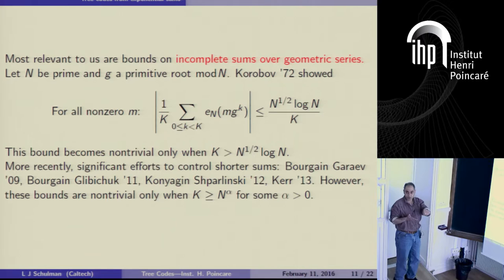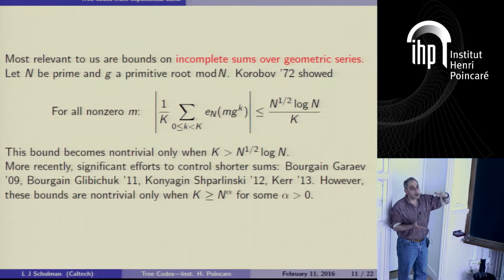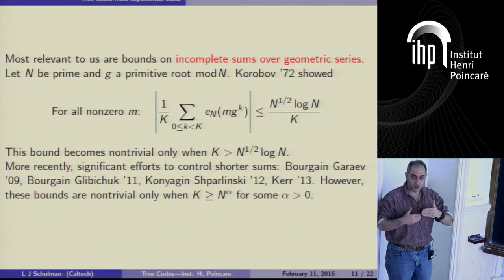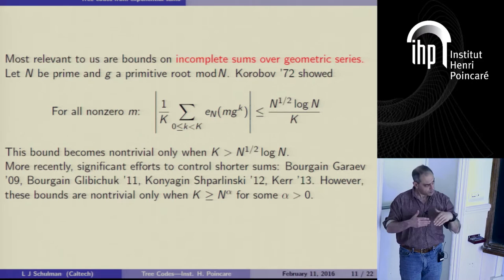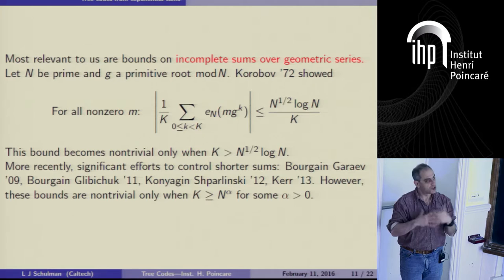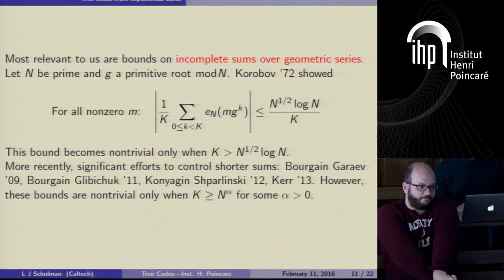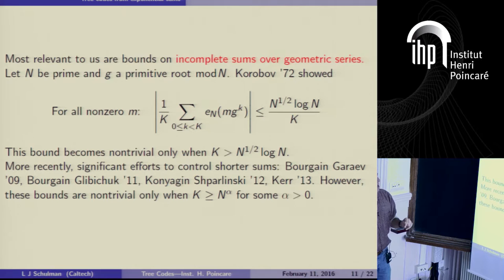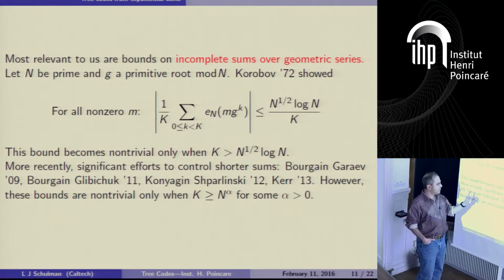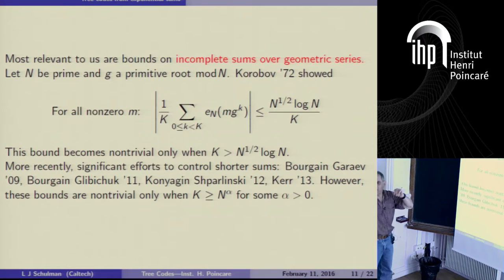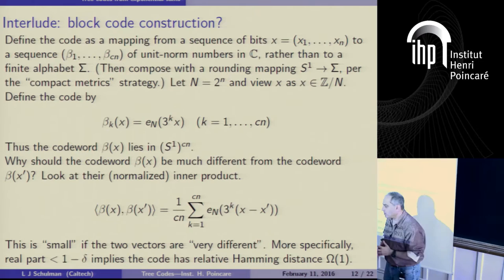That's a multiplicative or geometric series — quite different from an additive one. If you know about the sum-product phenomenon, this is old news to you. Multiplicative series like this behave very differently from additive ones. Korbov showed this upper bound: if the number of terms in your series is more than the square root of capital N, then the normalized exponential sum becomes less than one — you get progress. When a geometric series is long enough (at least square root of the ring size), all Fourier coefficients of this geometric series are small.